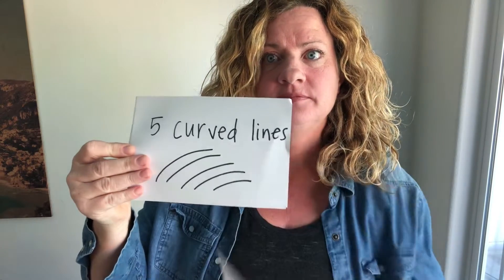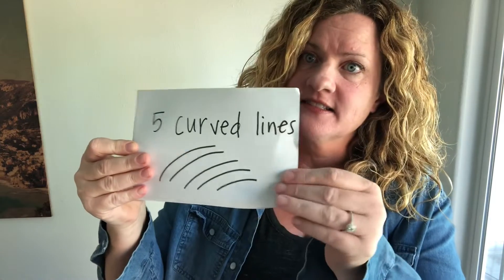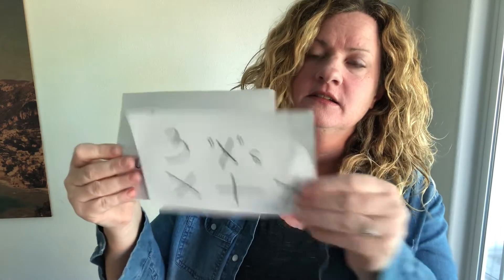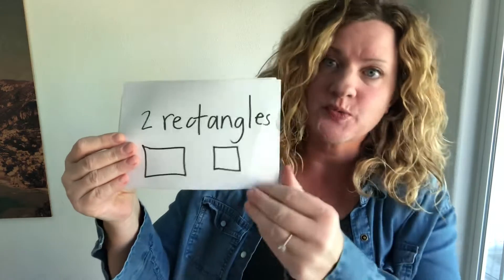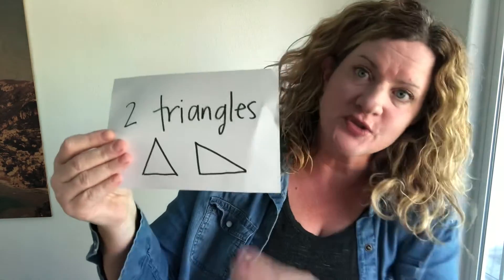Here are the different things you're going to include in your project: three circles, four more circles, a halo around one circle, five curved lines, three X's, a cluster of dots and dashes, two rectangles, two triangles, a tic-tac-toe which is just two straight lines and two horizontal lines, and seven squiggles. Everybody's going to have the same elements, but each person's final project will look very different because there are so many ways to arrange these shapes and lines.